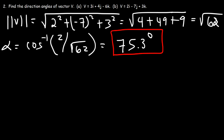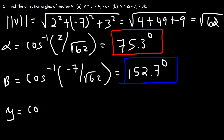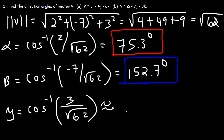Beta is the arc cosine of the y component negative 7 divided by √62, which gives approximately 152.7 degrees. Gamma is the arc cosine of the z component 3 over √62, which is approximately 67.6 degrees.